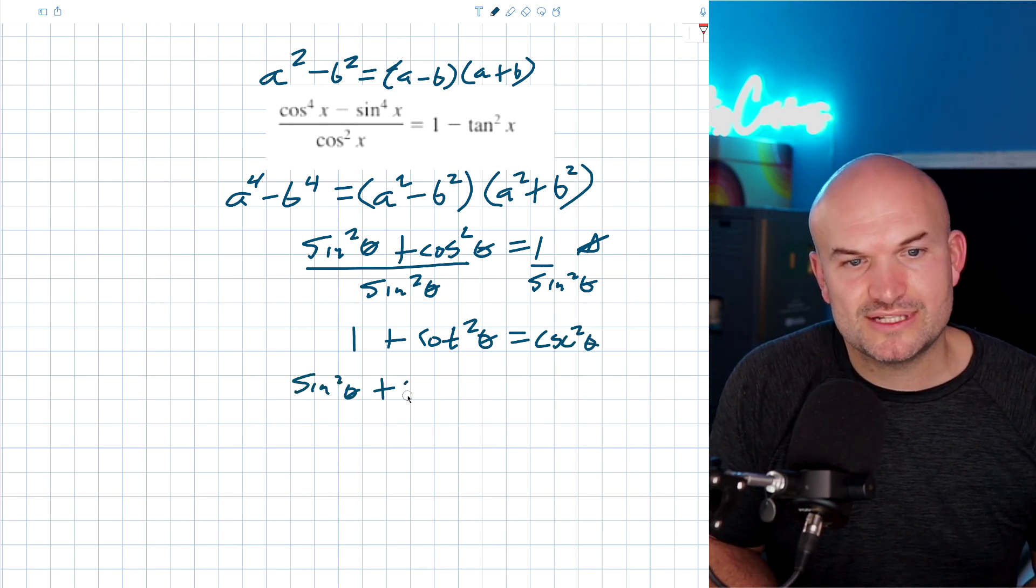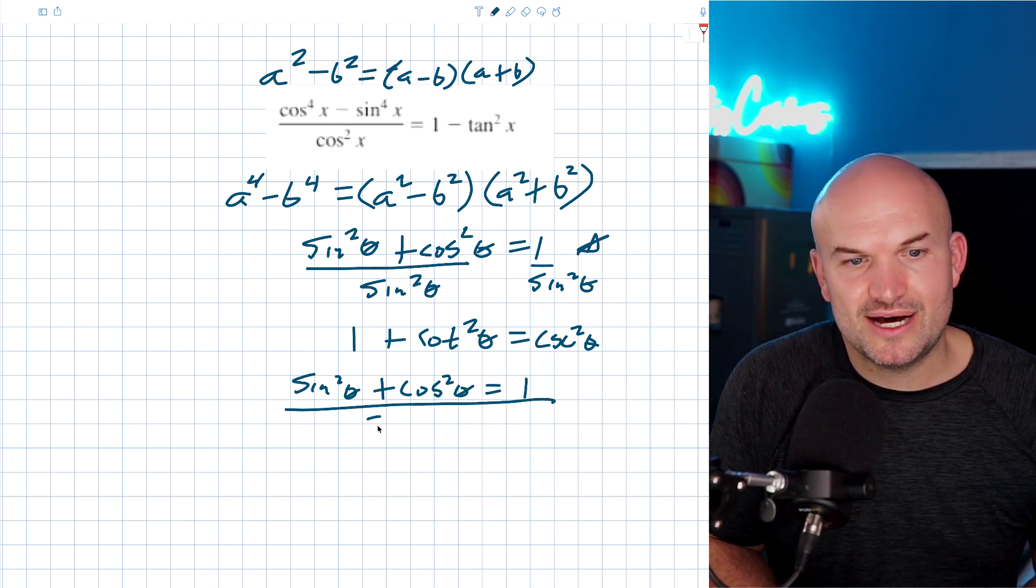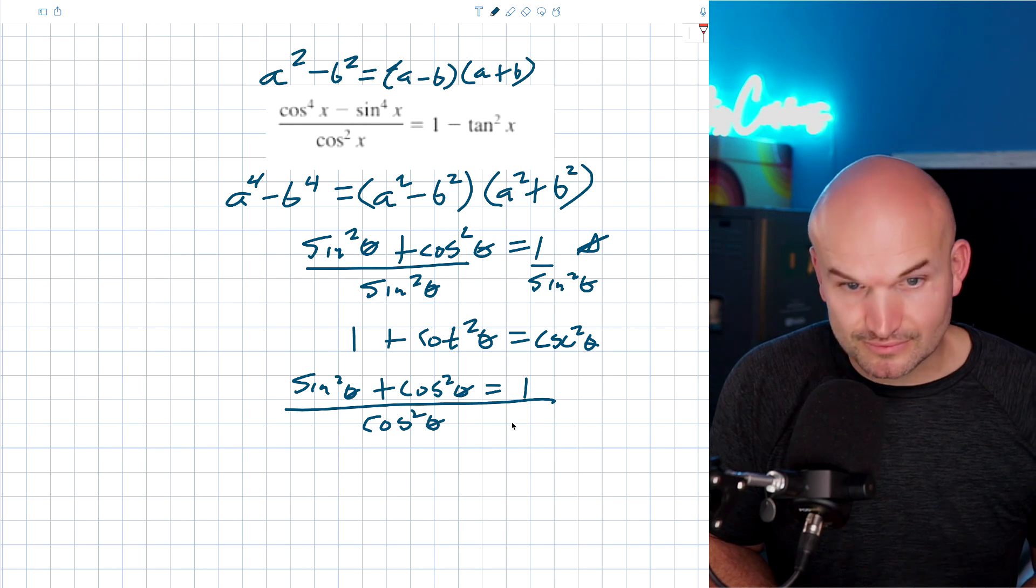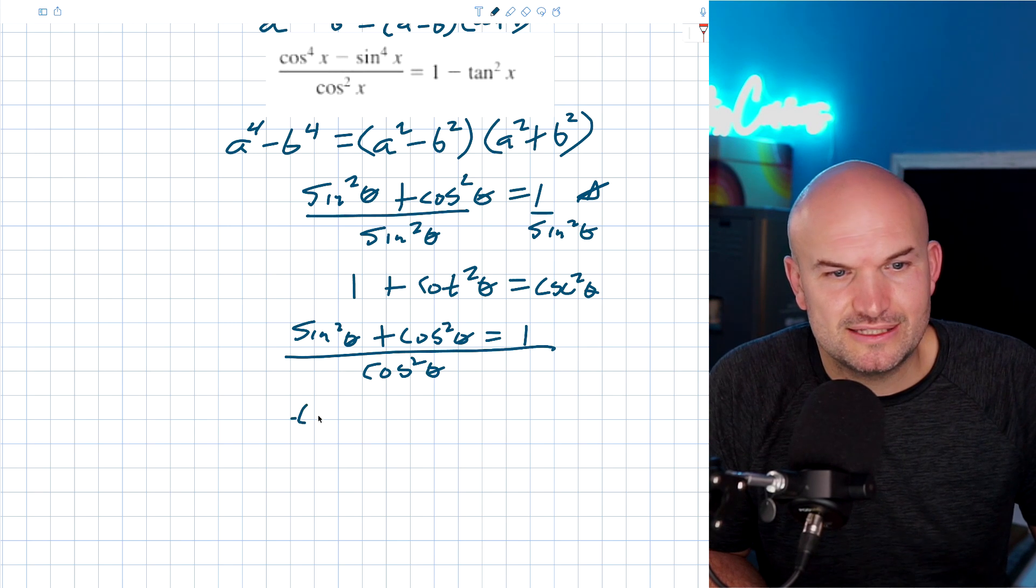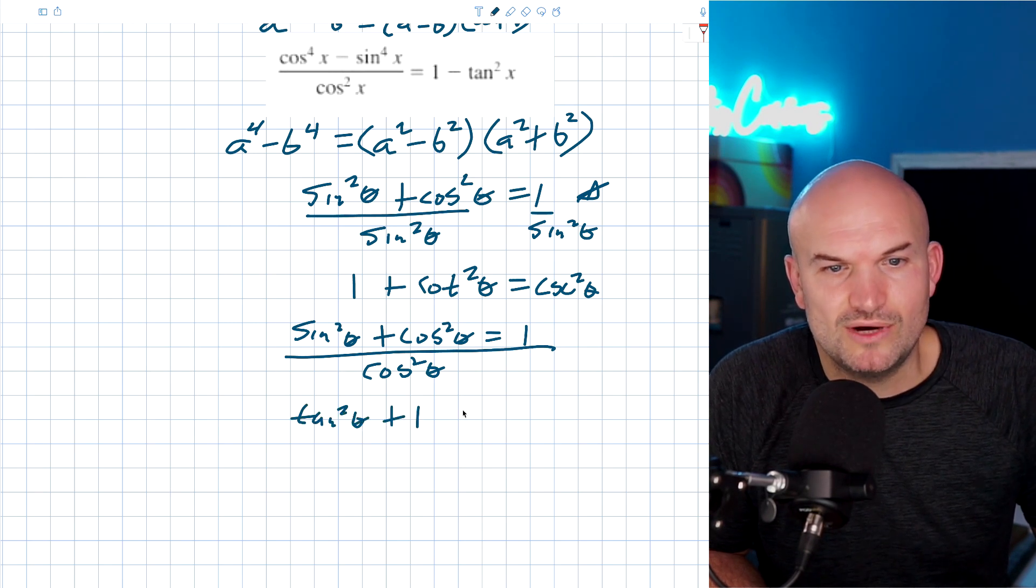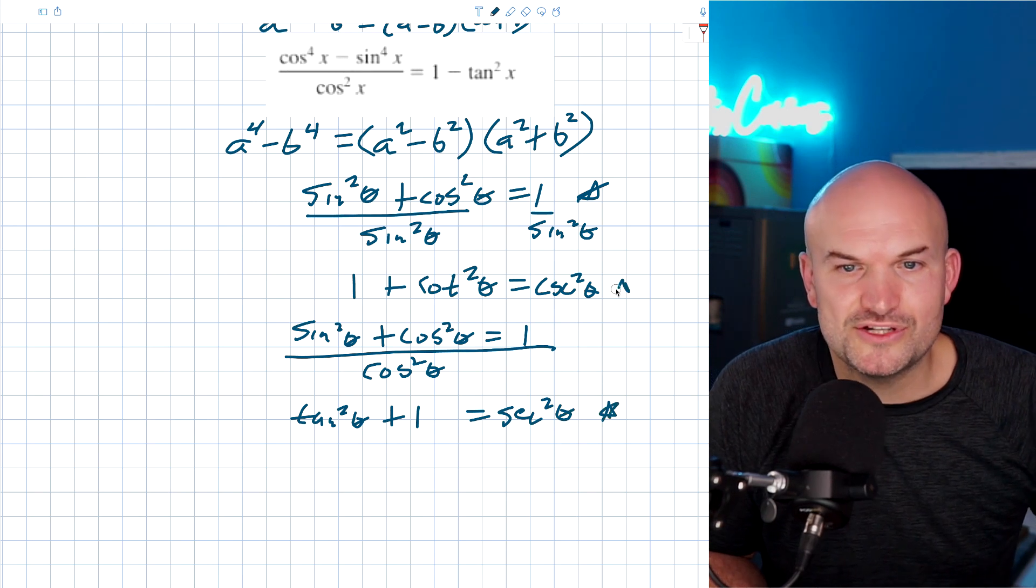And if you had sine squared of theta plus cosine squared of theta is equal to one, let's say you divided everything by a cosine squared of theta, everything by that, on the left and on the right-hand side, then you would have a tangent squared of theta plus one is equal to a secant squared of theta, right? So those are your Pythagorean identities.